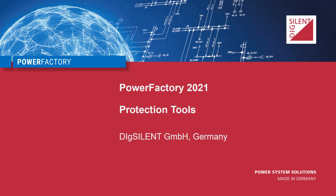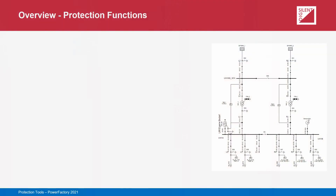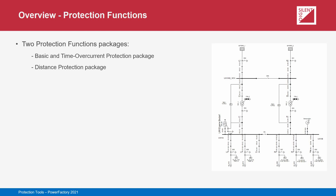This presentation provides an overview of the main protection functionality available for DIgSILENT PowerFactory. There are two main license modules available for the provision of protection functionality in PowerFactory. The basic and time overcurrent protection module provides the core protection functionality and facilitates modeling and analysis involving time overcurrent, directional, as well as differential relays. This core protection functionality can be further extended for the modeling and coordination of distance protection by additionally purchasing the distance protection license module.